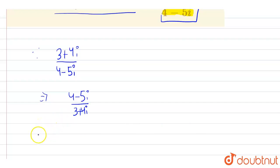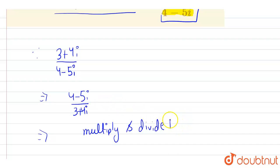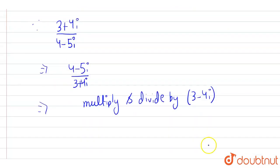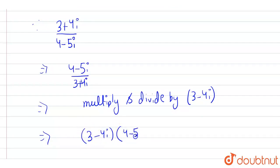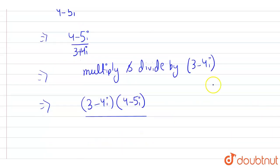For the multiplicative inverse, we will multiply and divide our new function by (3 - 4i). So our expression will become: (3 - 4i)(4 - 5i) in the numerator, upon (3 - 4i)(3 + 4i) in the denominator.